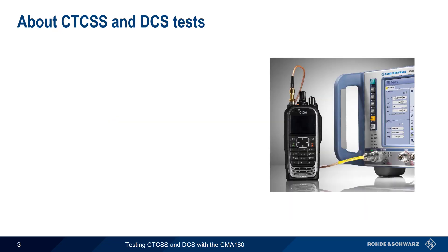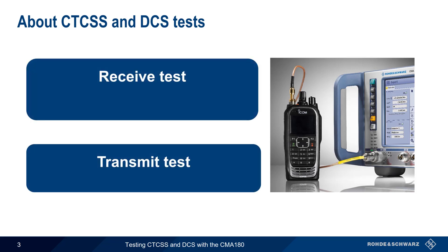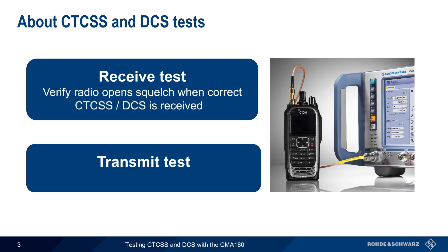There are two basic types of CTCSS or DCS testing: receive and transmit. In receive tests, the goal is to ensure that the radio opens squelch when the configured CTCSS tone or DCS code is present in the received signal. In transmit tests, we want to verify that the radio under test is transmitting the correct CTCSS tone or DCS code. Both of these tests can be easily configured on the CMA180, and we'll walk through the test procedures for both types, using both CTCSS and DCS.